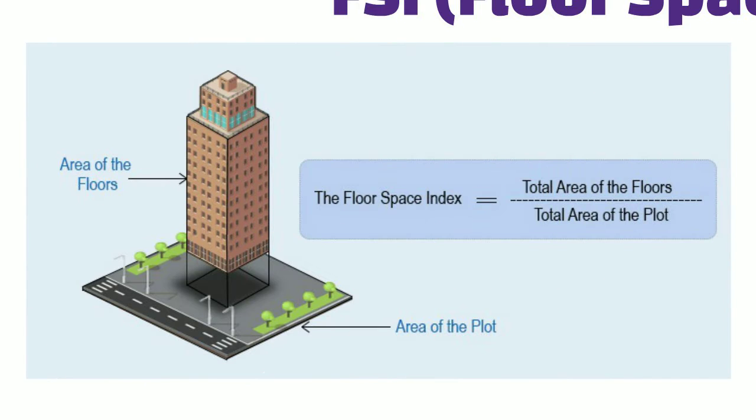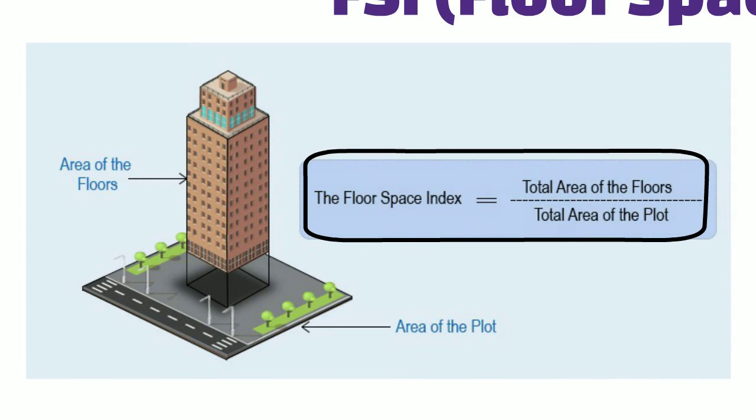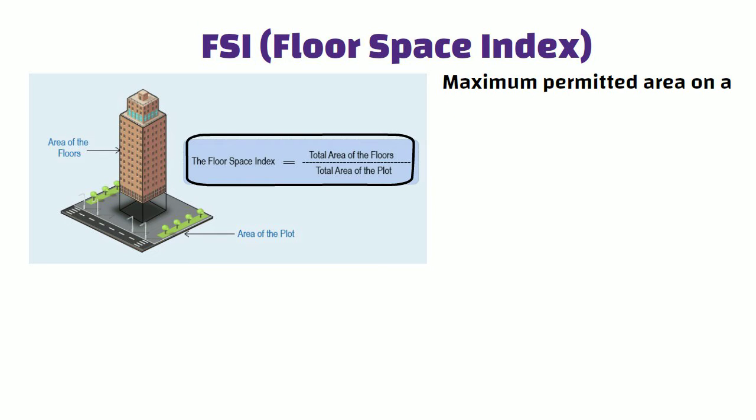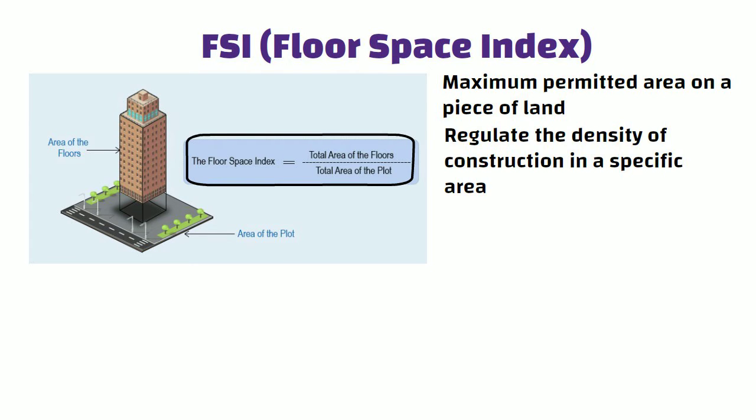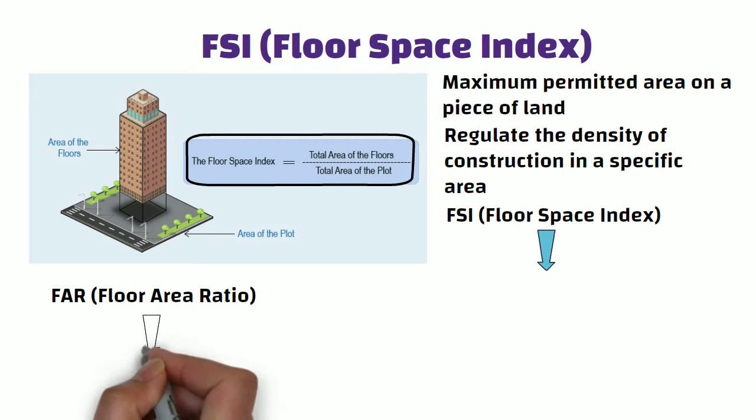Floor space index represents the ratio of the total floor area of a building to the size of the land on which it is built. That is, maximum permitted area on a piece of land for construction. FSI is used to regulate the density of construction in a specific area. FSI and FAR represent the same concept but are denoted differently. FAR is expressed in decimals while FSI is presented as a percentage.